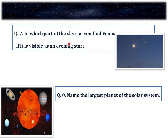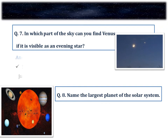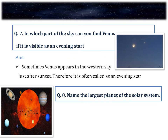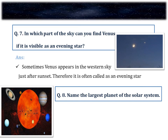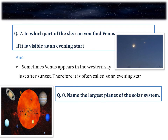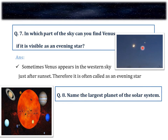Question number 7. In which part of the sky can you find Venus if it is visible as an evening star? Venus appears in the western sky just after the sunset and thus it is called the evening star. Venus appears sometimes in the eastern sky before the sunrise and sometimes in the western sky just after sunset, which is why it is called a morning star or an evening star.